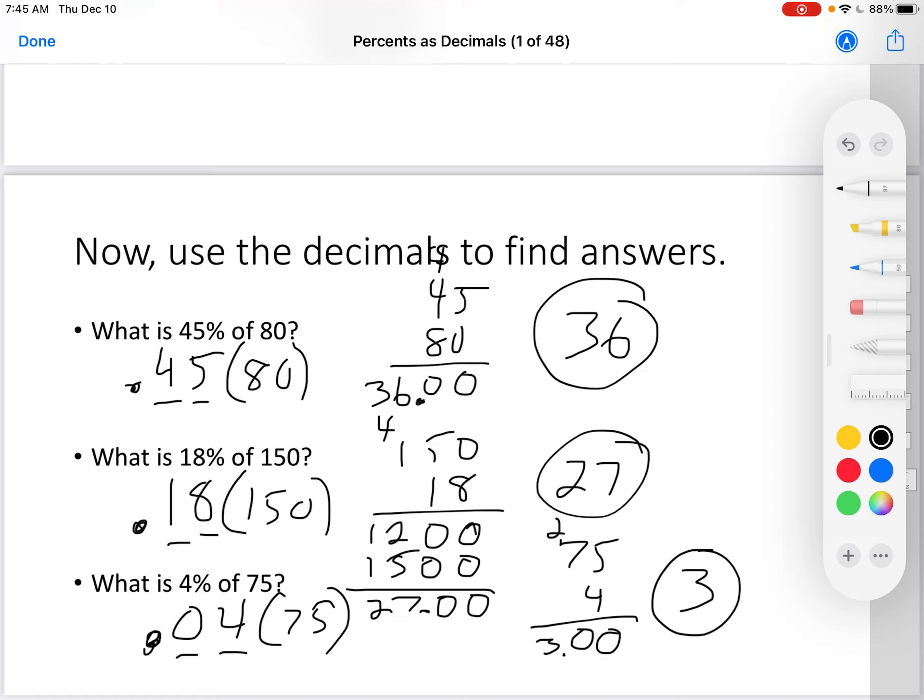Okay, that's how easy. You change it to a decimal, and then you multiply. And remember to put your decimal points in at the correct places. Write the answer off to the side with a circle. Any questions, ask your teacher.